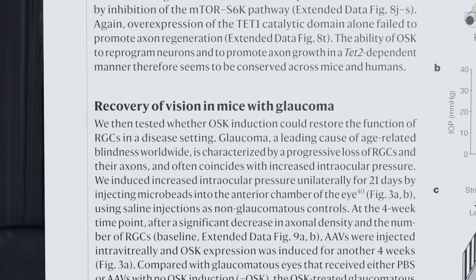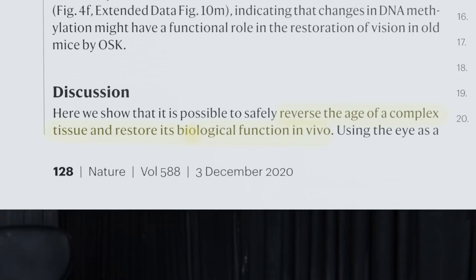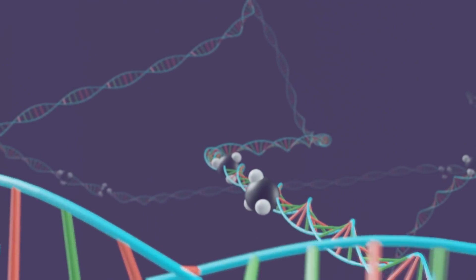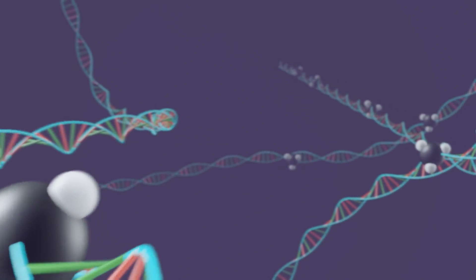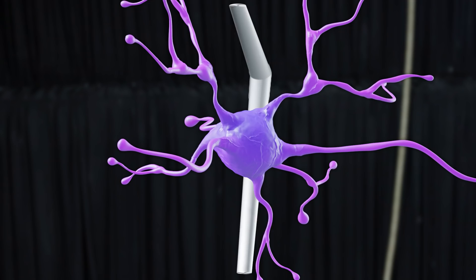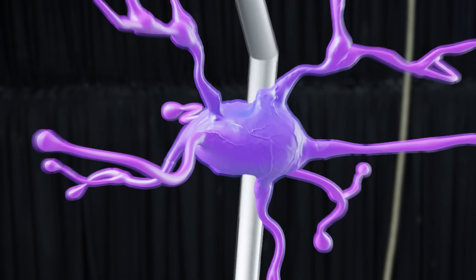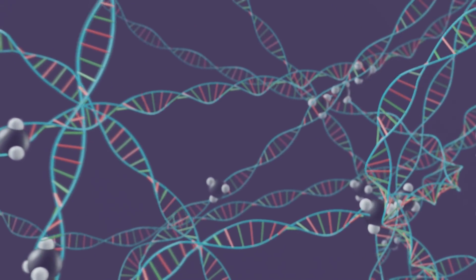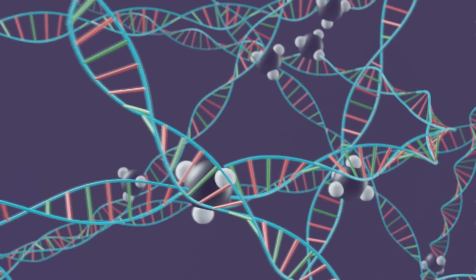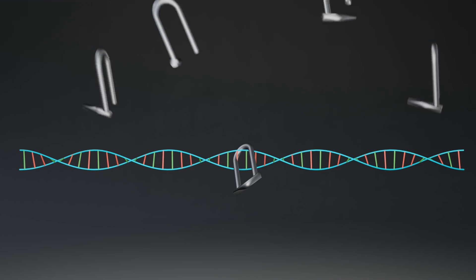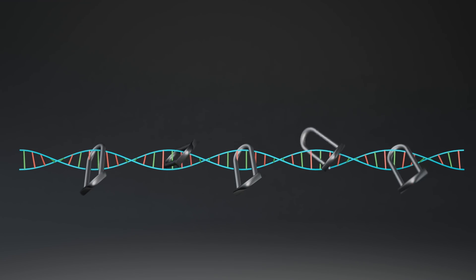Not only that, but they also restored vision in a separate in vivo trial, accomplished by making the cells young again. DNA methylation is another way of gauging the age of someone — the more methyl tags on your DNA, the older you are. After being damaged, ganglion nerve cells rapidly accumulated methyl tags on their DNA. You could think of methyl tags as bike locks to genes: if a gene gets methylated, the gene can no longer be useful. If you lock up all of the useful genes, the cell just dies, which is exactly what happens.